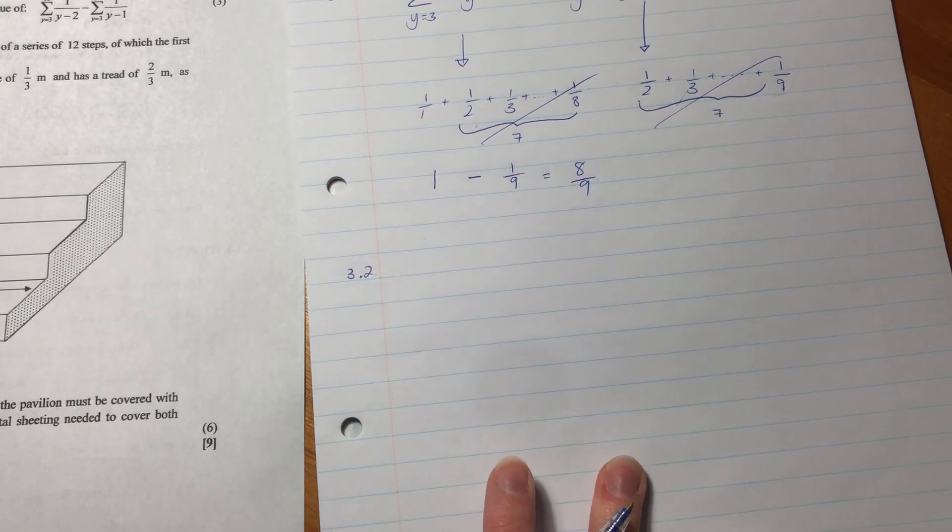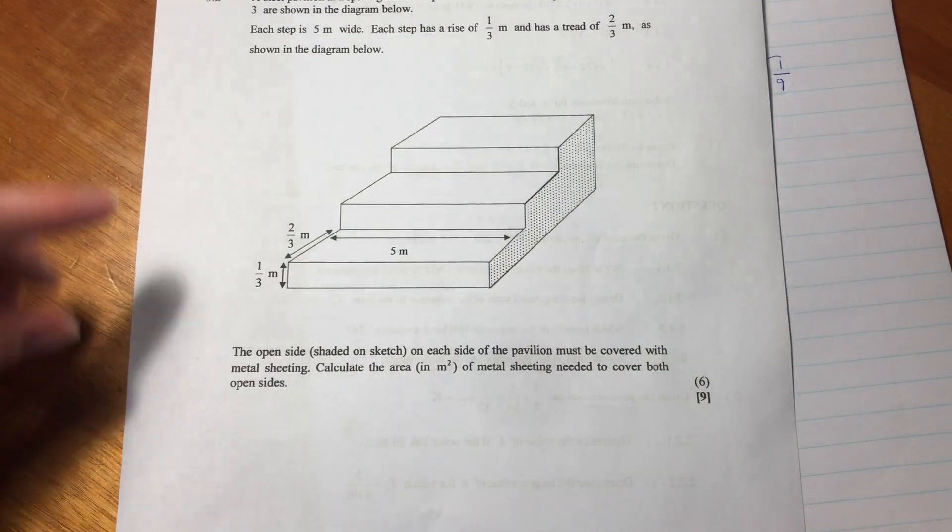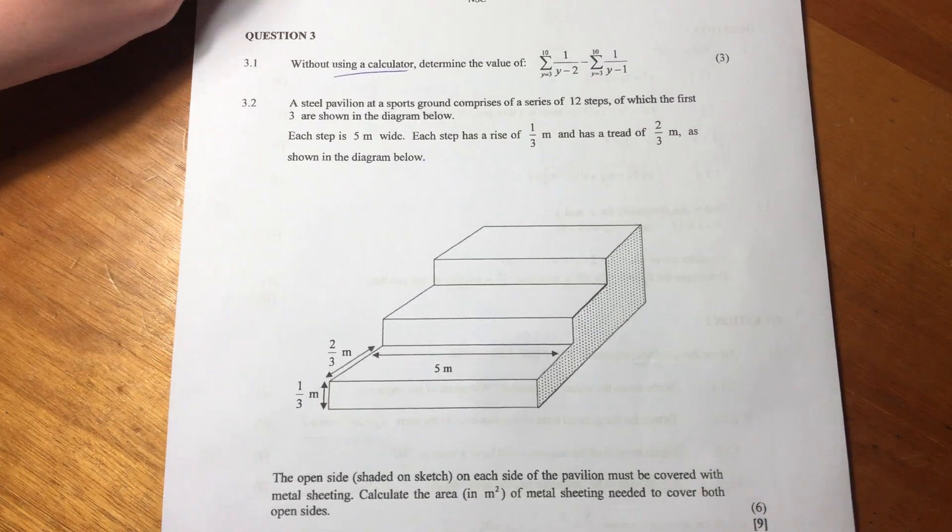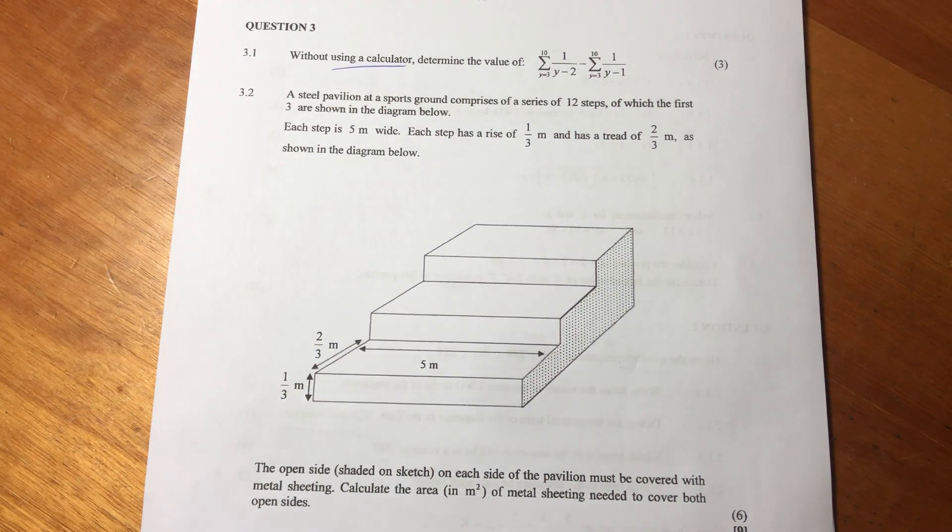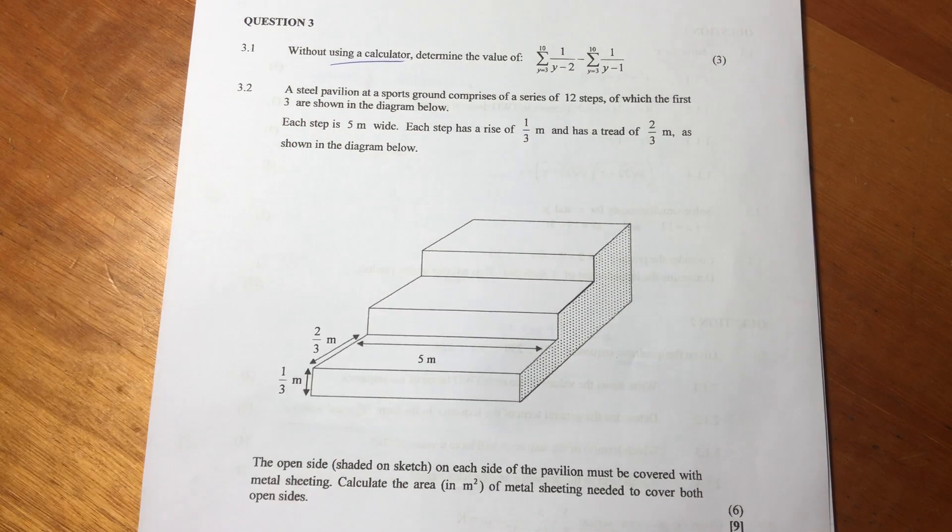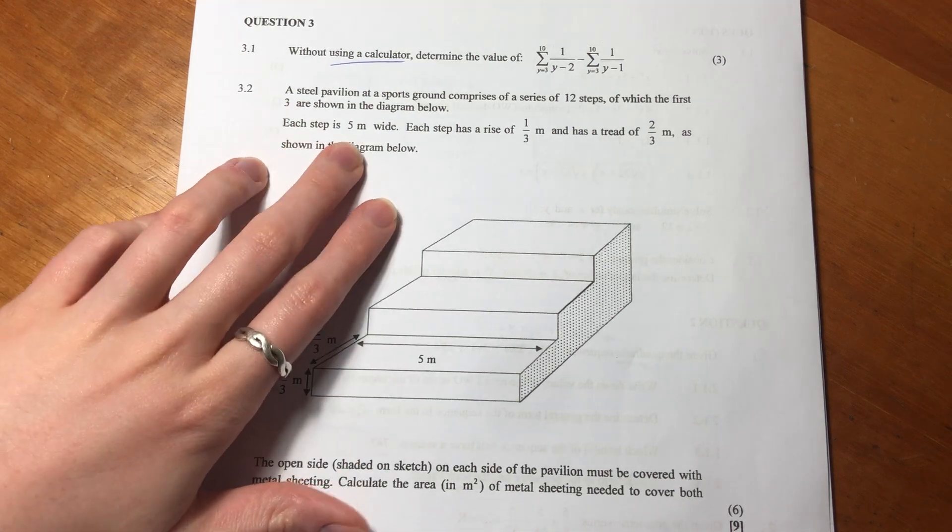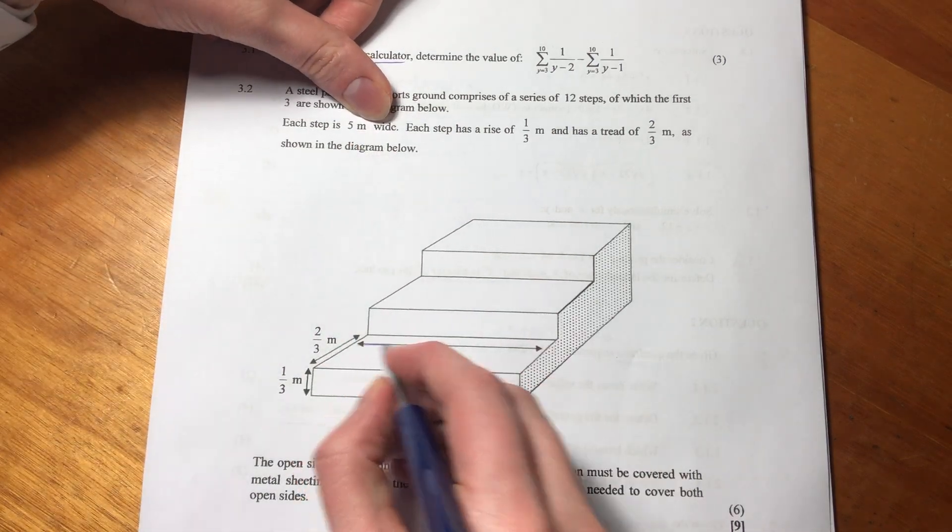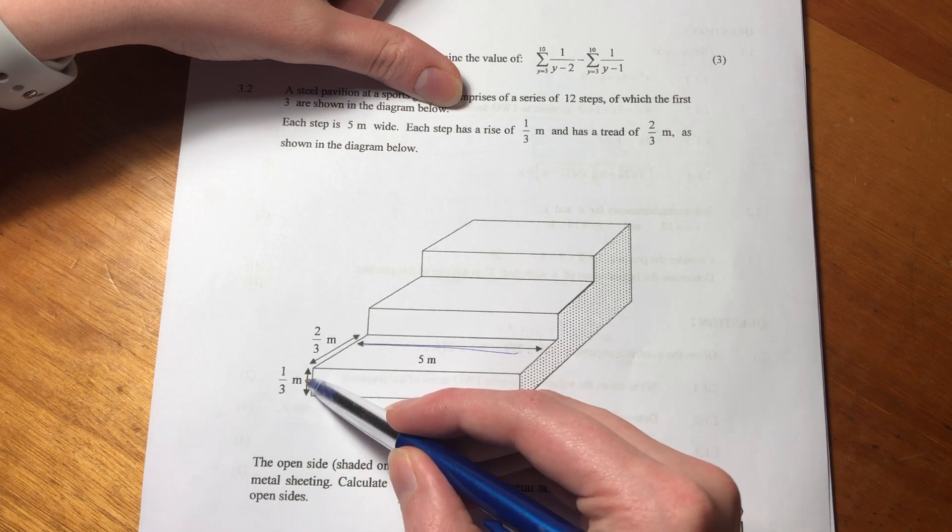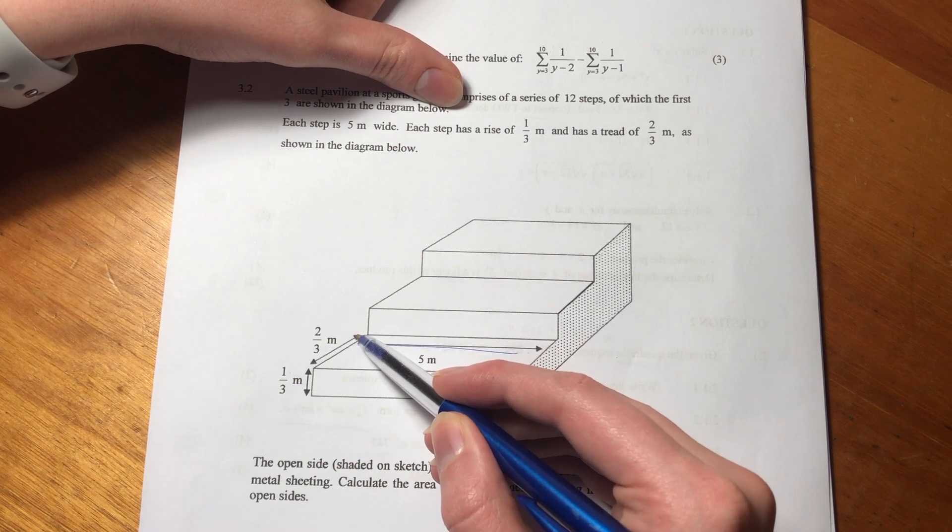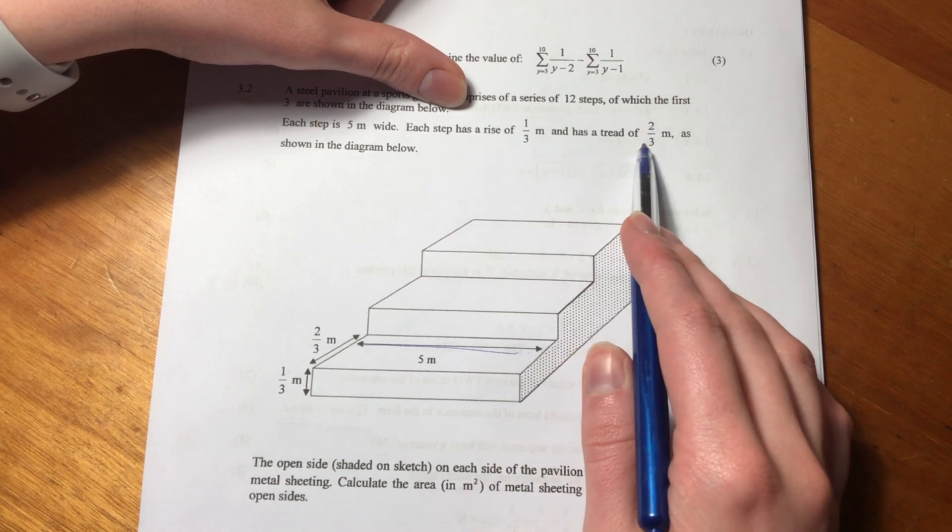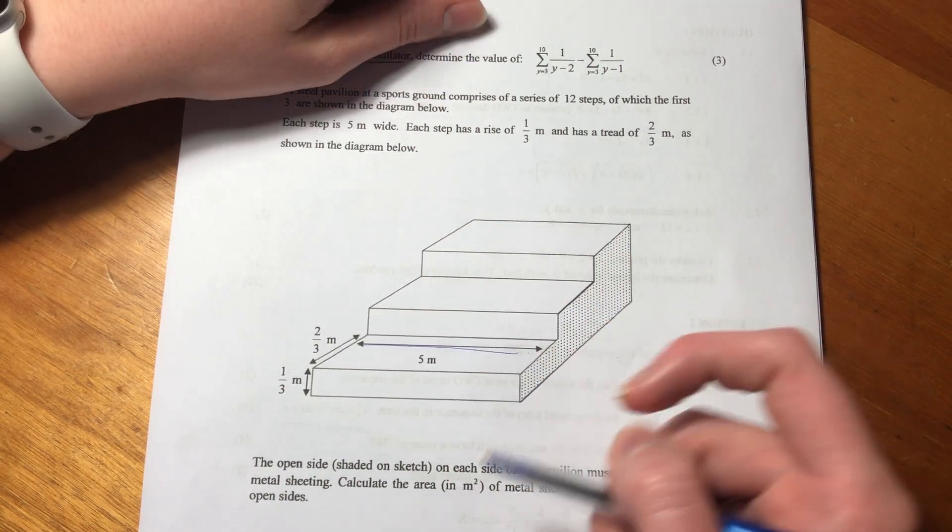Part 3.2. This is one of those questions where you might want to skip it, but we're going to solve it. A steel pavilion at a sports ground comprises a series of 12 steps, of which the first three are shown in the diagram. Each step is 5 meters wide, rises 1 and 1/3 meters, and has a tread—fancy word for depth—of 2/3 meter.